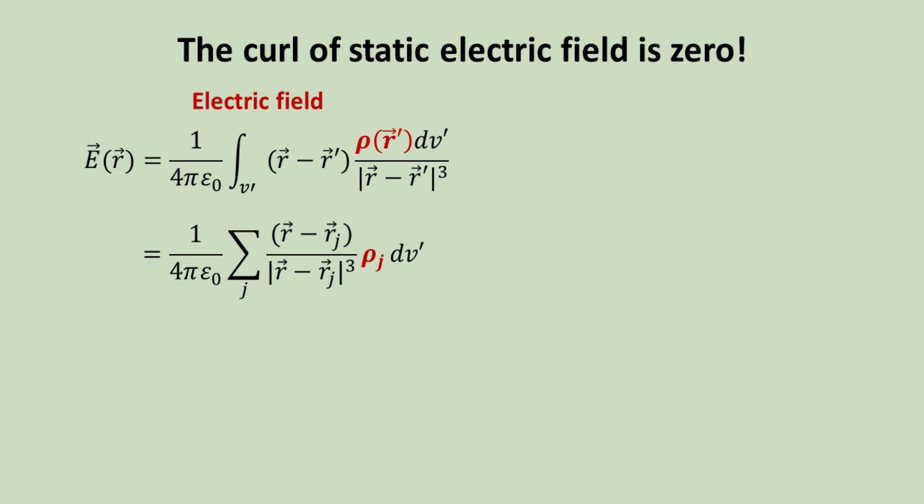Now we are almost ready to prove that the curl of electric field is zero. It is much easier for our derivation if we express the continuous integral as discrete sum of point charges. We see that the electric field can be viewed as a superposition of electric fields from discrete point charges. For each point charge, the electric field is purely radial, a crucial point for our discussion.